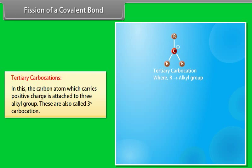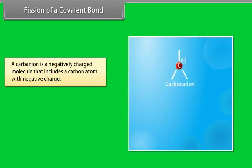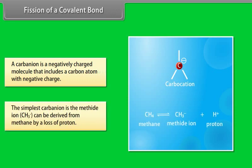The order of stability of carbocations follows from tertiary to primary. A carbanion is a negatively charged molecule that contains a carbon atom with negative charge. The simplest carbanion is the methide ion, which can be derived from methane by loss of a proton.